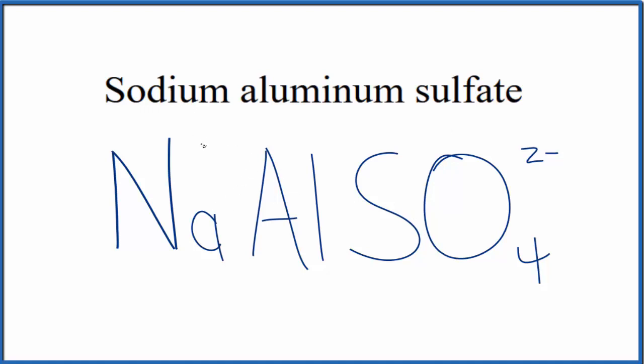If you look up sodium on the periodic table, that'll have a 1 plus ionic charge—it's in group 1. Aluminum, group 13, sometimes called 3A, that's 3 plus. And then this whole sulfate ion right here is 2 minus.